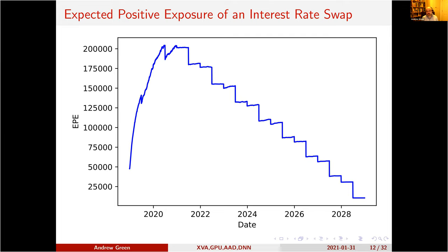This is just an example of the expected positive exposure of an interest rate swap, which is a very common type of interest rate derivative featured in XVA calculations. Interest rate swaps are one of the most common instruments, commonly used to hedge interest rate exposures or associated with bond issues. In this particular example this is a 10-year interest rate swap, though they can run out to 30 or 40 years — not unusual.